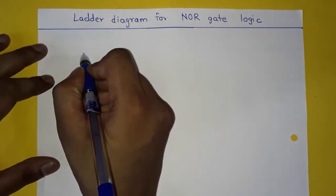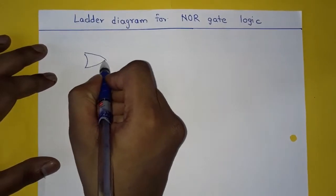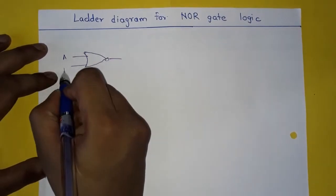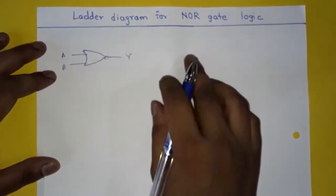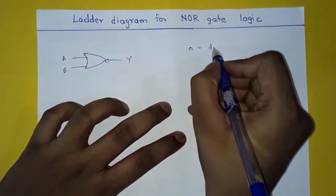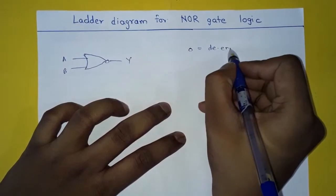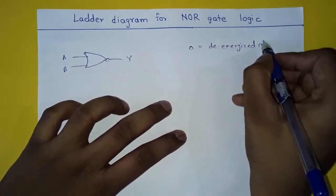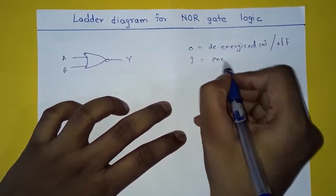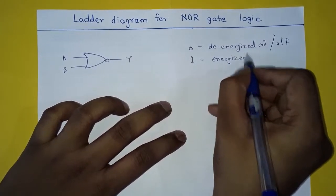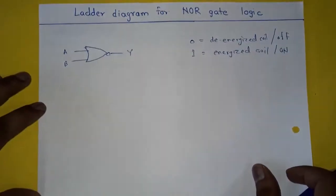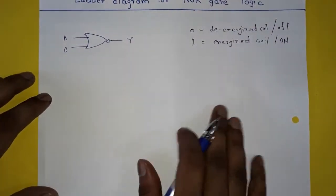This is the symbol of the NOR gate logic. This is A, this is B, and this is Y, that is our output. Zero will represent de-energized coil or off condition, and one will represent energized coil or on condition. Let's see how to use NOR gate logic in ladder diagram.